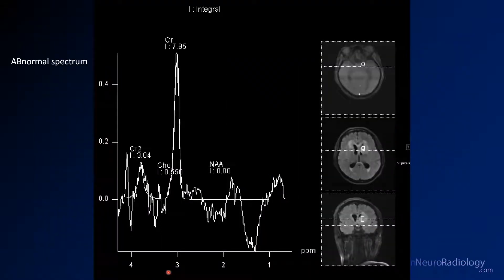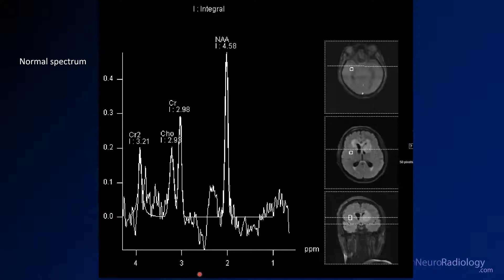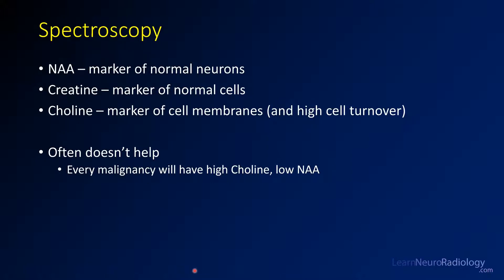This abnormal spectrum is what you might get in a case like lymphoma — from this case specifically. You have some lactate, no normal neurons, and very decreased normal peaks. The normal comparison spectrum is from the same patient in a more normal-appearing area of contralateral white matter. To recap: NAA is a normal neuronal marker, creatine is a marker of normal cells, and choline is a cell membrane and high cell-turnover marker. Every malignancy tends to have high choline and low NAA.